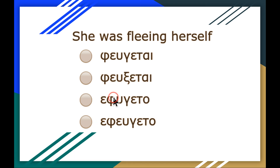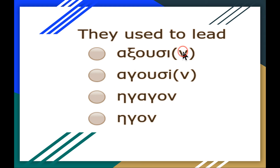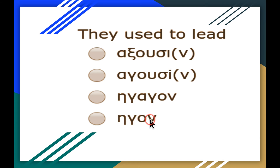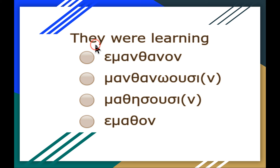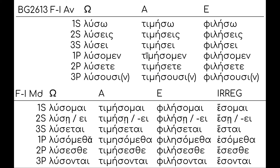For 'they used to lead': if the word begins with an alpha, it gets lengthened. So agō in the imperfect becomes ēgon. For 'they were learning': that's an epsilon contract — there's your present stem, there's your ending: emanthanon. So the imperfect of epsilon contract verbs uses the present stem with epsilon augmentation and the appropriate endings.